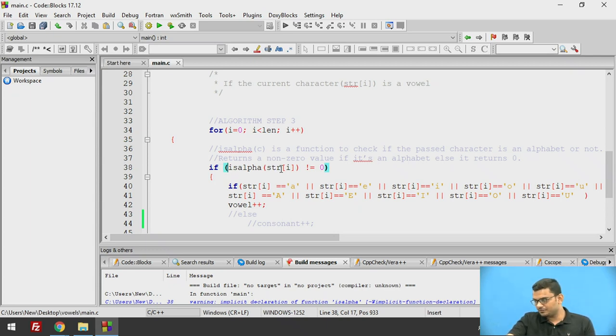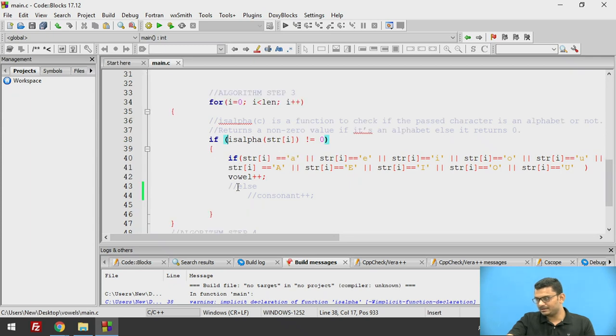Now if this if condition returns a non-zero integer that means the current character is an alphabet. We compare if it is a, e, i, o, u in the small letters or A, E, I, O, U in the capital letters. If any of these 10 characters, capital vowels or small vowels, are detected we increment vowel by 1.